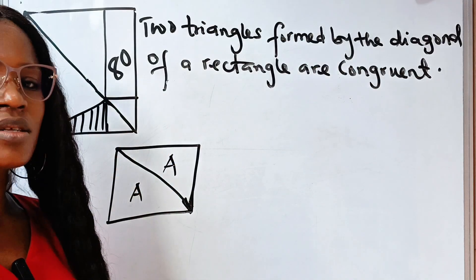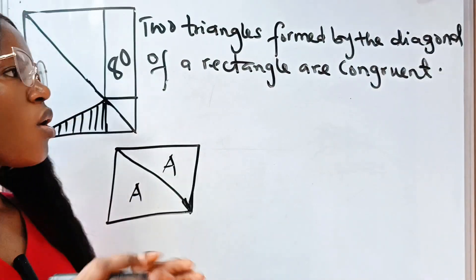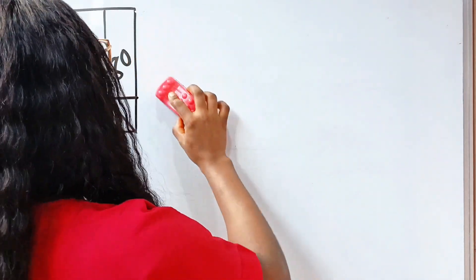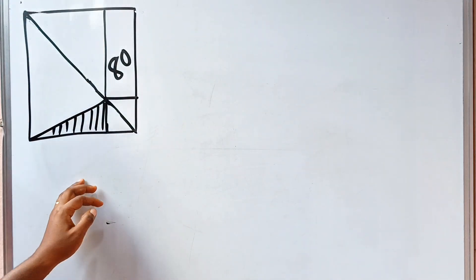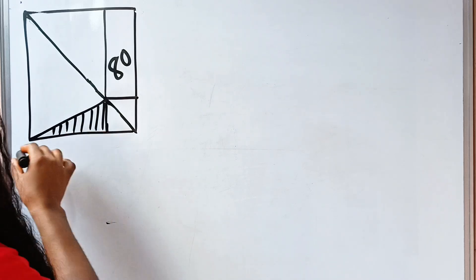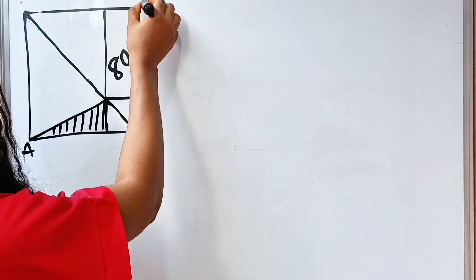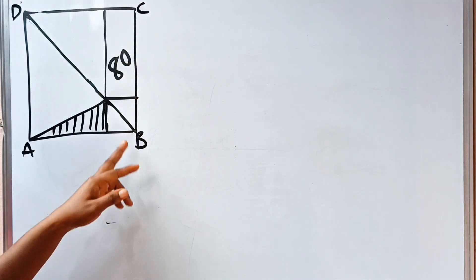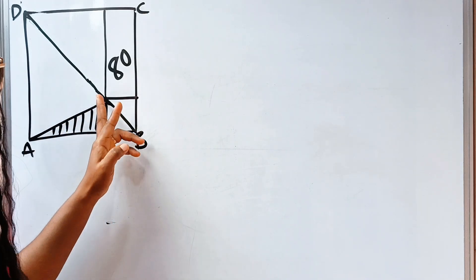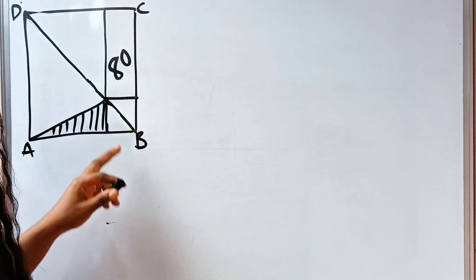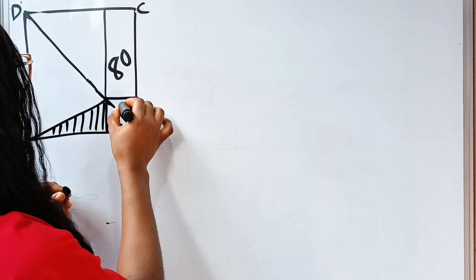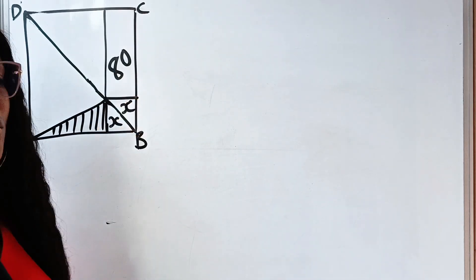If the triangles are congruent, their areas are equal. That is exactly what we are going to use to find the area of the shaded portion. We have this as a rectangle, so let's call the vertices A, B, C, and D. In this portion we have a rectangle with a diagonal, so if we call this part x — that is, the area of that part is x — then definitely the area of the other part is also x.